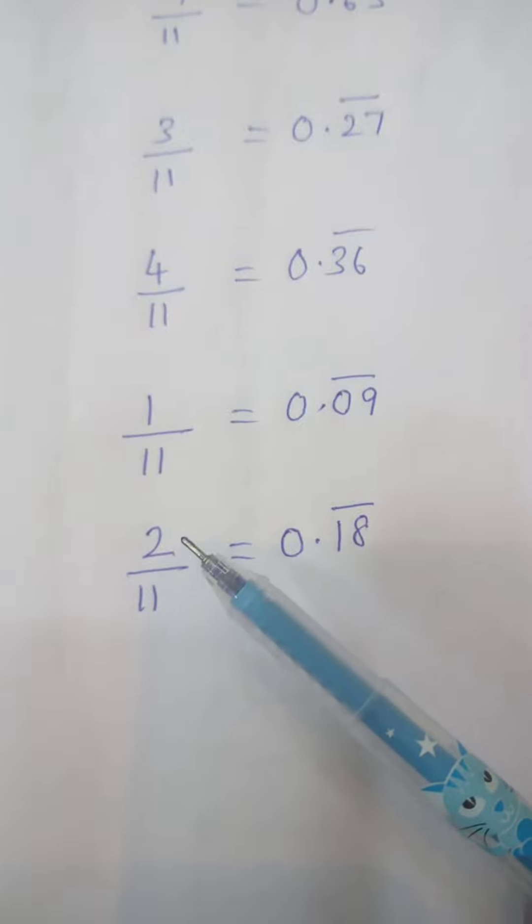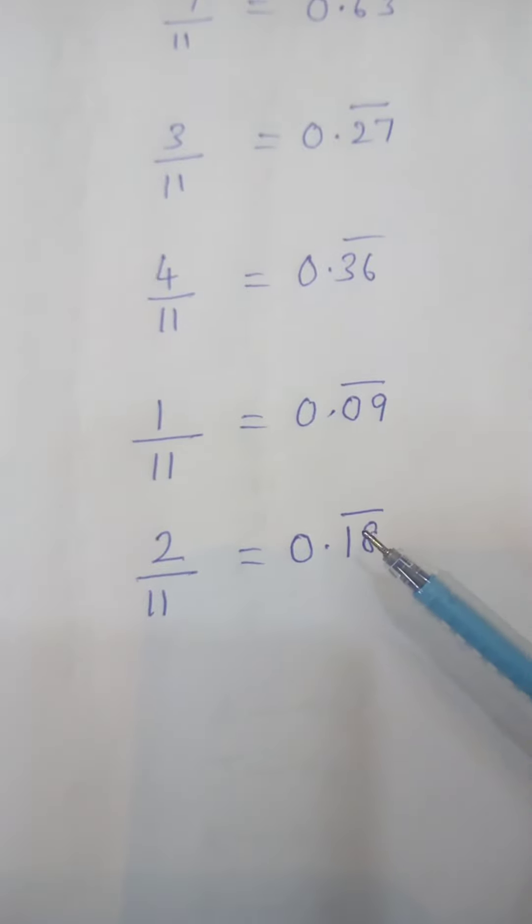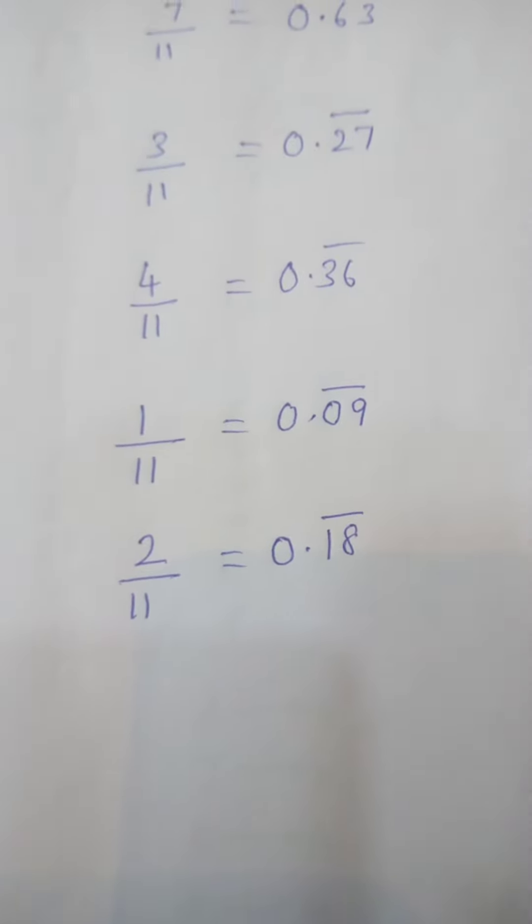2 by 11. 9 times 2 is 18, so write 0.18 bar. Thank you.